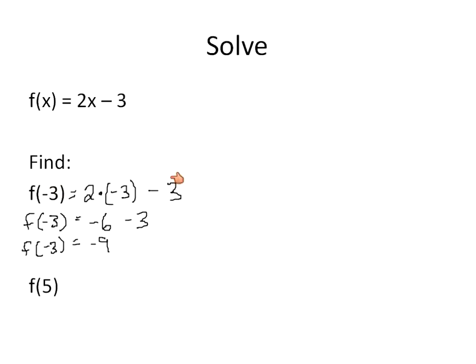Negative 6 minus 3 more gives me negative 9. My input was negative 3. My output is negative 9. Let's look at the next one. The function at the point positive 5, that would be 2 times positive 5 minus 3. So my f of 5 is equal to 2 times 5 is 10, and 10 minus 3 is equal to 7.